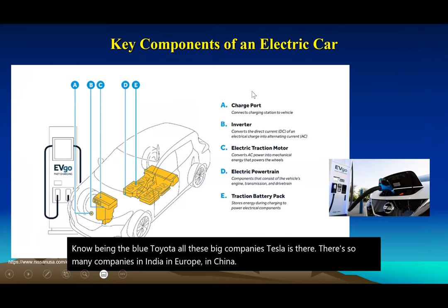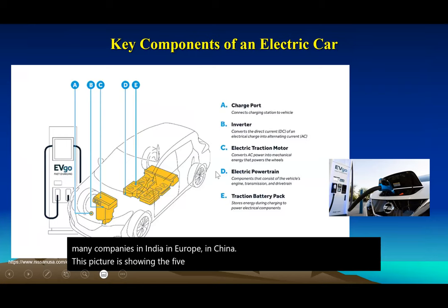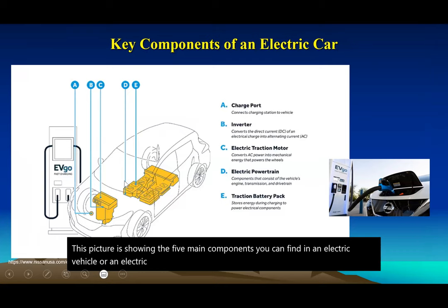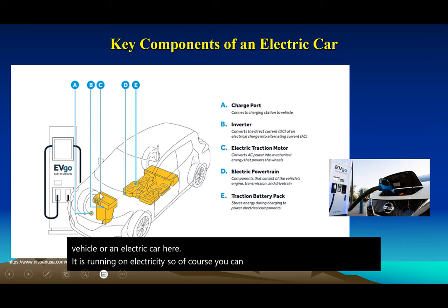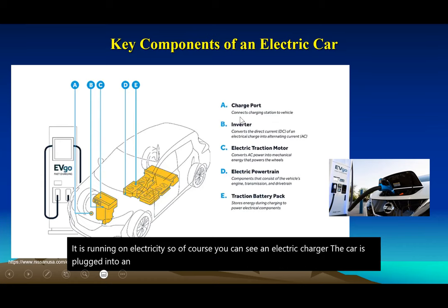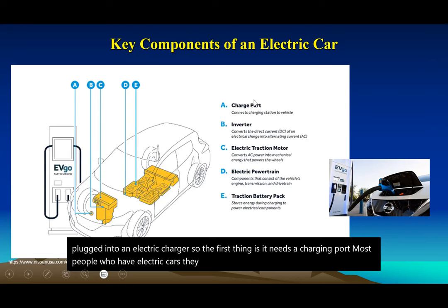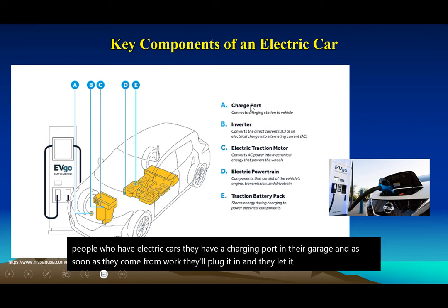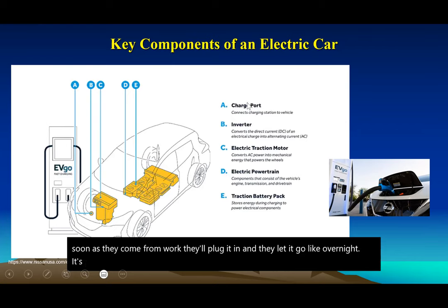This picture shows the five main components of an electric vehicle. Since it runs on electricity, you can see an electric charger — the car is plugged into one. The first component is the charging port, which connects the charging station to the vehicle. Most people with electric cars have a charging port in their garage, plug it in when they come home from work, and let it charge overnight.